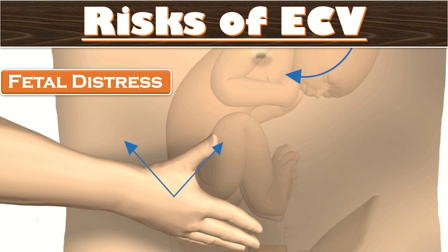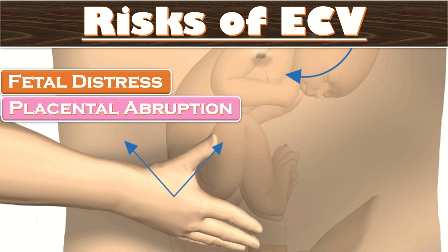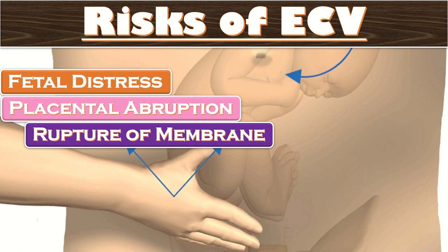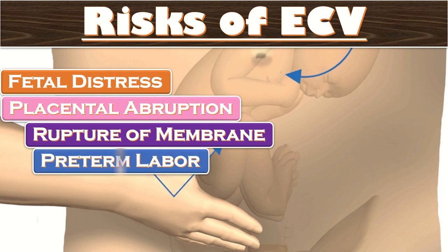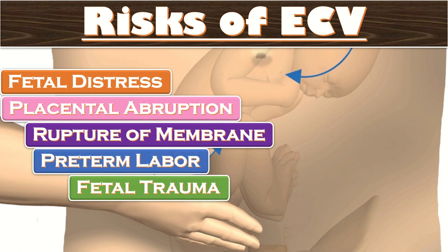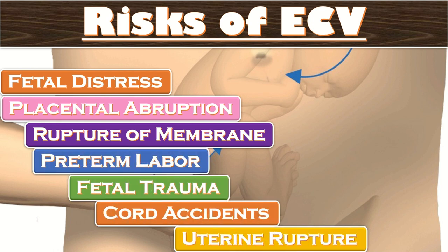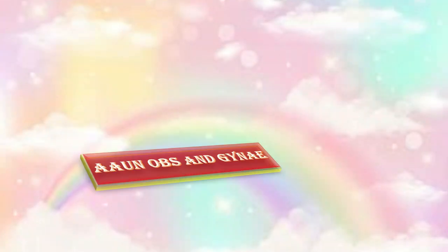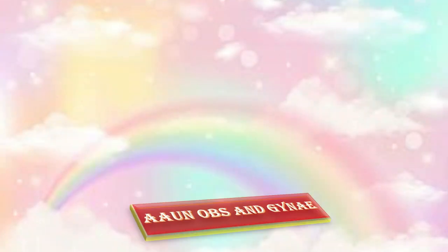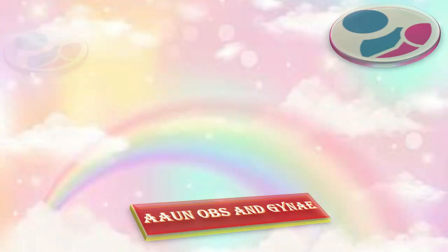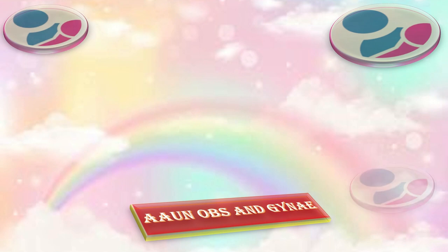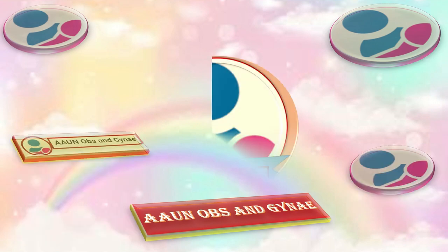Other risks of ECV include placental abruption, rupture of membranes, preterm labor, fetal trauma, cord accidents, and uterine rupture. Thank you so much. That was all about external kephalic version. Please subscribe to OBS and GYNAE. Allah Hafiz.